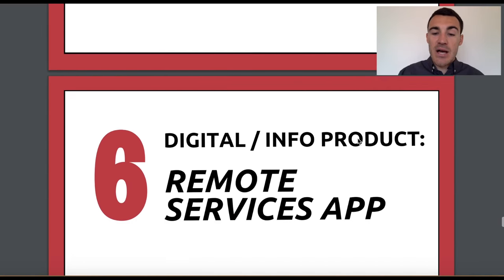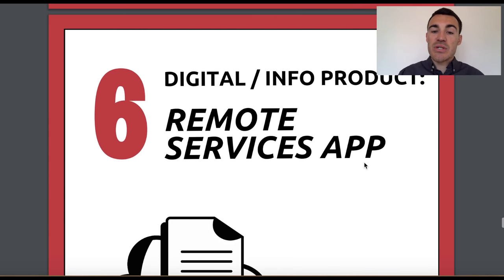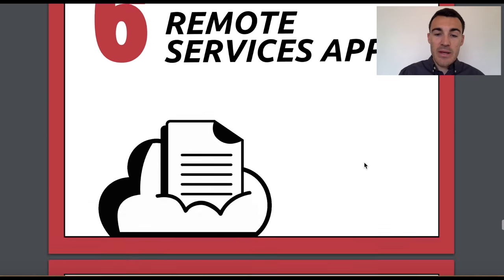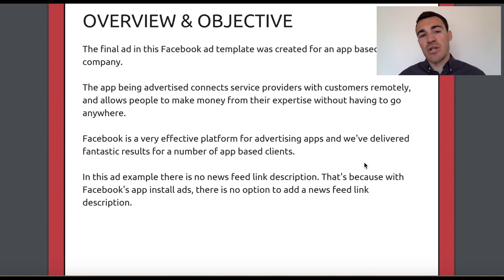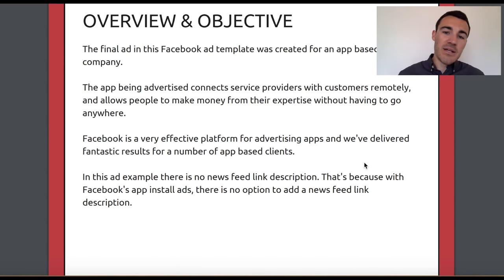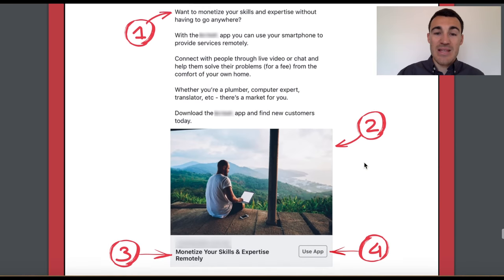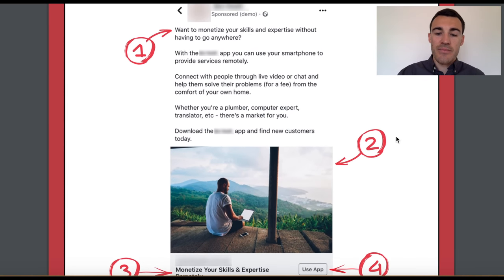The final example is a remote services app. This is an app where people can provide services to each other in another location where they haven't previously got any sort of connection. So let's say you want someone to show you something in another location or provide a service in a completely different location — that's what this app was designed for.